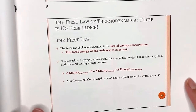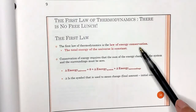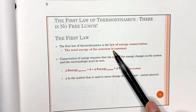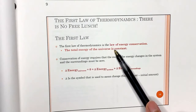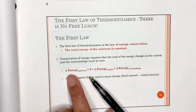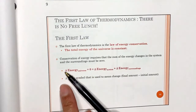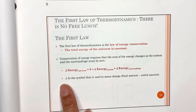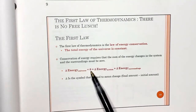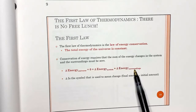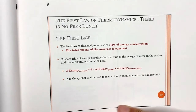The first law of thermodynamics says the total energy of the universe is constant. Whatever the system gains came from the surroundings, and whatever the system loses goes to the surroundings. The symbol delta means change — final minus initial. Delta energy of the universe equals zero because the change in the system is balanced out by the change in the surroundings.